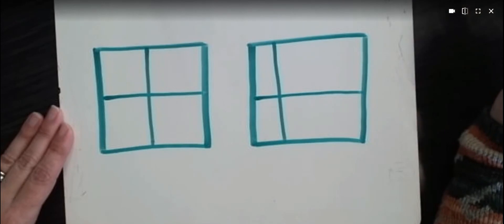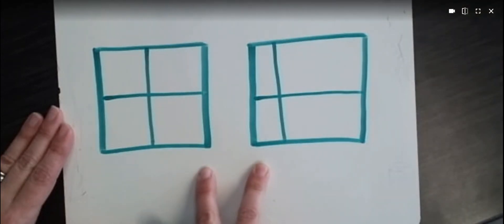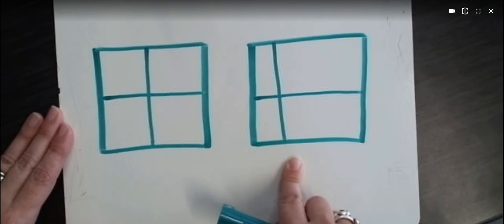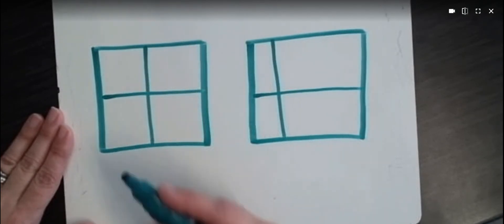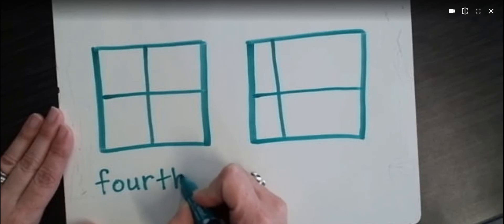Okay, now I've divided two squares into four parts. So this square is divided into four parts, and this square is divided into four parts. But only one of them is divided into four equal parts. So we can only call one of them fourths. Which one is it? Good.